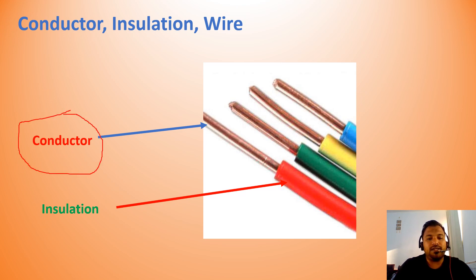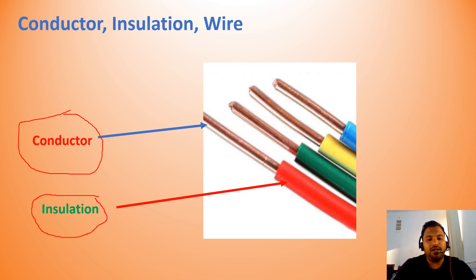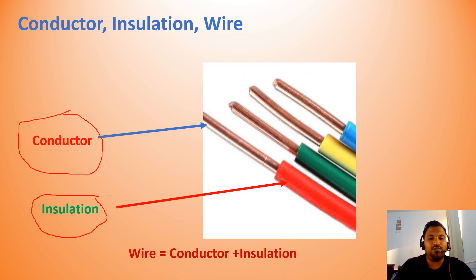The second element is insulation. To protect the conductor — which carries current — if you touch it, you will get a shock. To avoid shock, a protective material is provided over the conductor. This material is called insulation. So, a wire is nothing but a combination of a conductor and insulation. This whole thing together is called a wire.